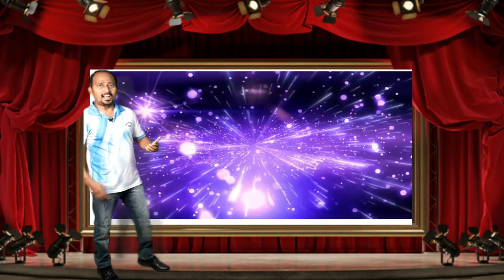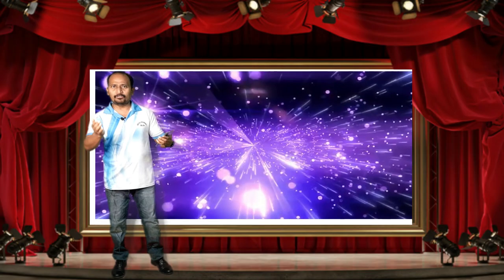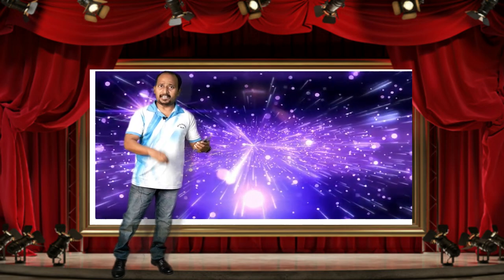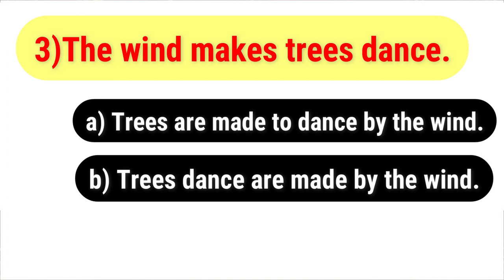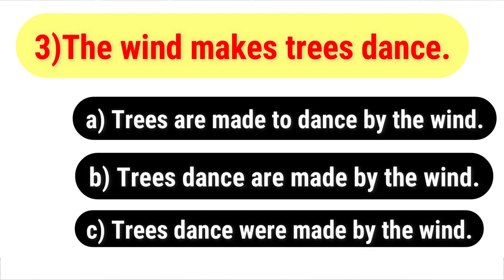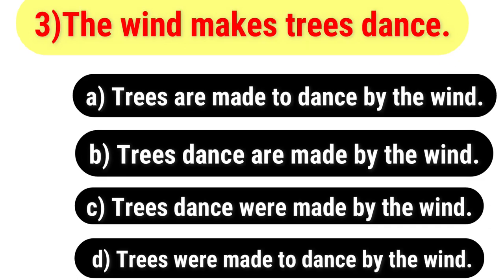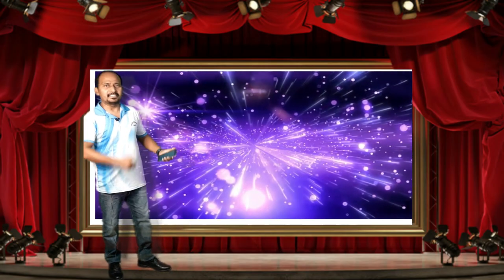The third sentence is in active voice: 'The wind makes trees dance.' You have to change it to passive voice. The options are: A) Trees are made to dance by the wind; B) Trees dance are made by the wind; C) Trees dance were made by the wind; D) Trees were made to dance by the wind. Your time begins now.